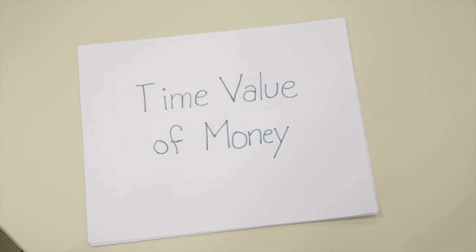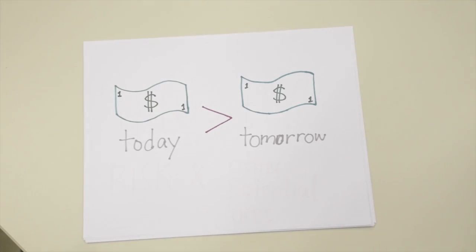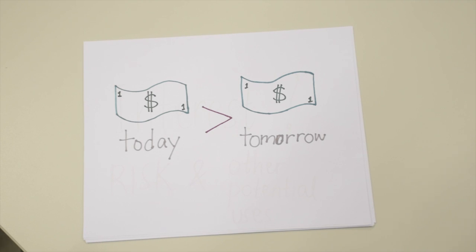Time Value of Money. So why is there a time value of money? It's because a dollar in hand today is worth more than a dollar in hand tomorrow. Why is that? Well, I could invest today and gain the return from that investment. I could avoid the loss of value due to inflation and costs. Or, I could lend the money today and gain the interest on that loan.